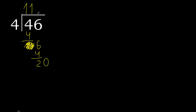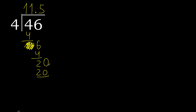Always complete with 0. Here, add a decimal point: 0 point. Bring down 20. 4 multiplied by 5 is 20 — that is exact. 20 minus 20 is 0. Therefore, 46 divided by 4 is 11.5.